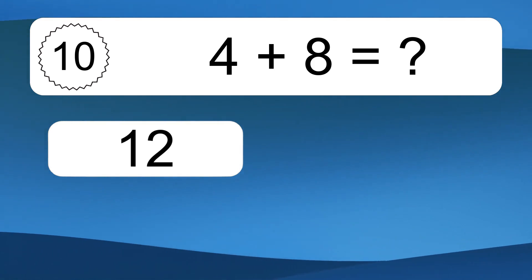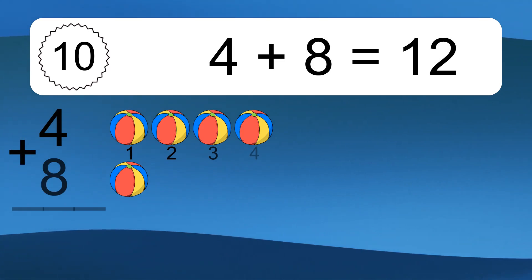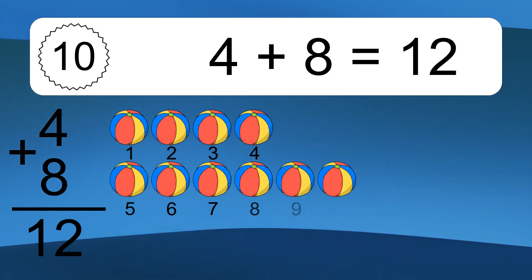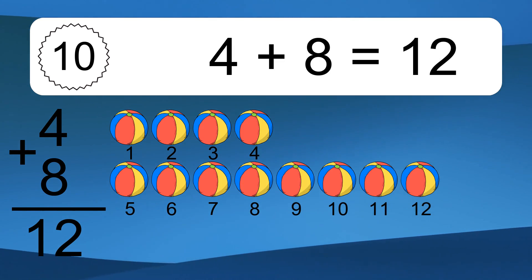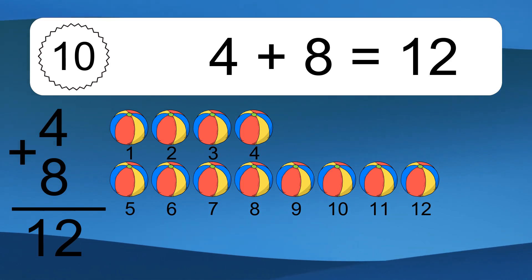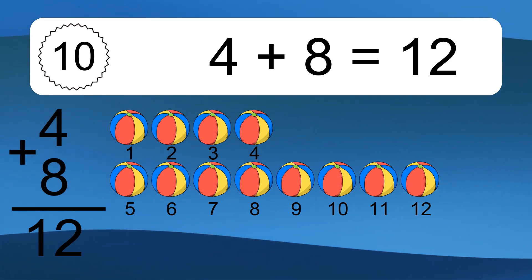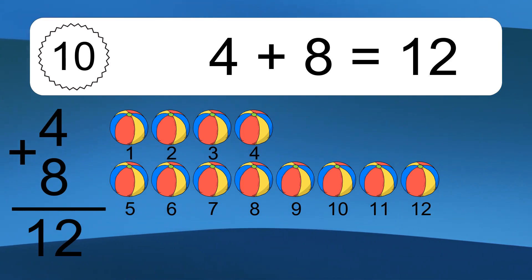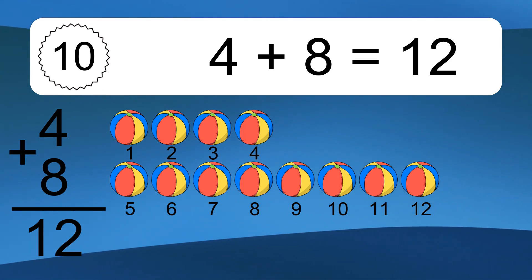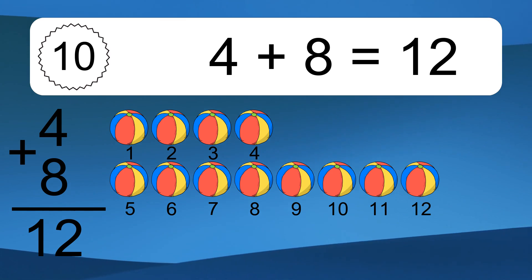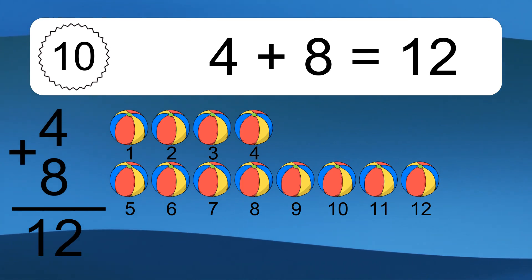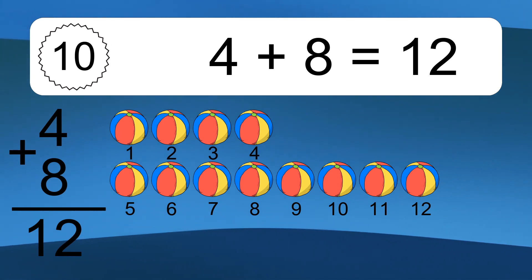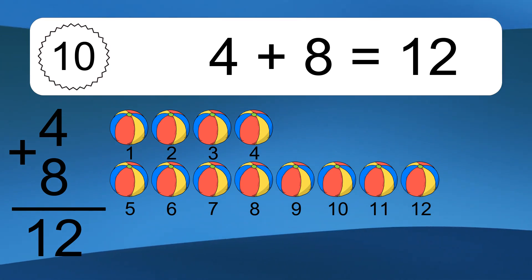4 plus 8 equals what? 4 plus 8 equals 12. Let's count it. 1, 2, 3, 4, 5, 6, 7, 8, 9, 10, 11, 12.